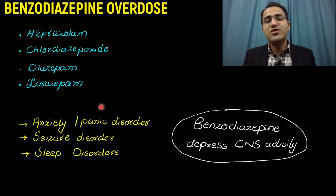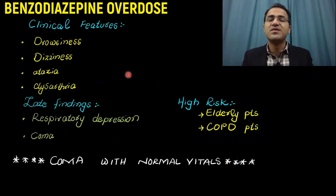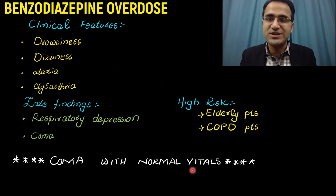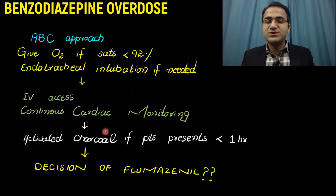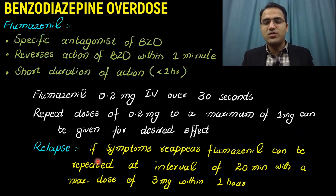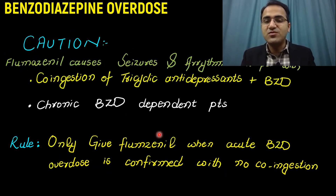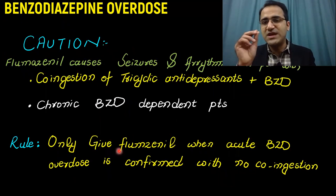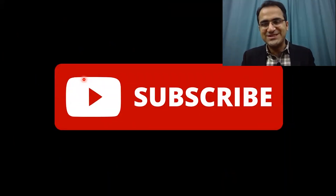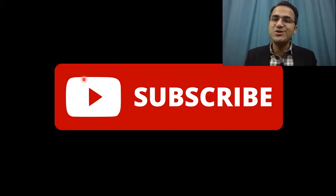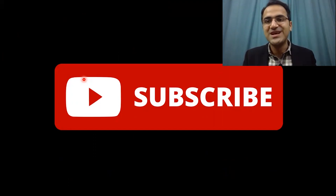In summary, we discussed commonly available benzodiazepines and their indications. Benzodiazepines depress the CNS; coma with normal vitals is characteristic of benzodiazepine overdose. Investigations include urine toxicology screen. Treatment involves an ABC approach, cardiac monitoring, activated charcoal, and flumazenil as a specific antidote — given only in patients with acute overdose, no chronic use, and no co-ingestion of tricyclic antidepressants. Please subscribe and check out other videos in the toxicology and emergency medicine series.